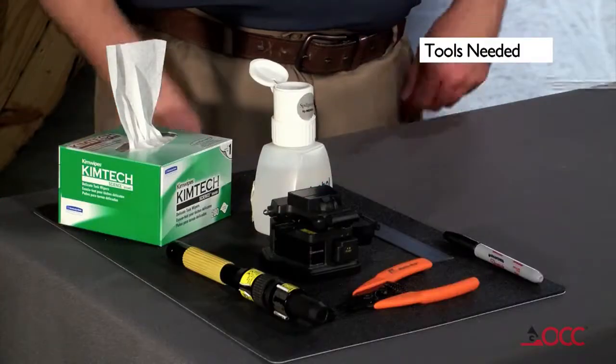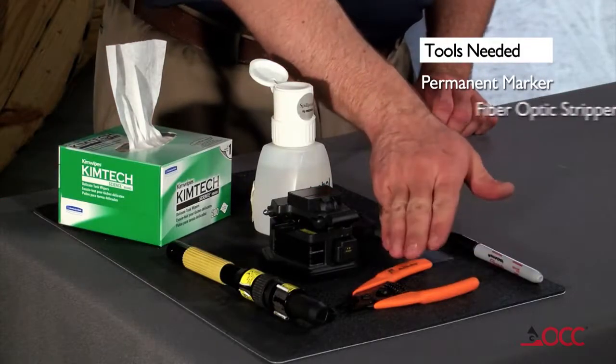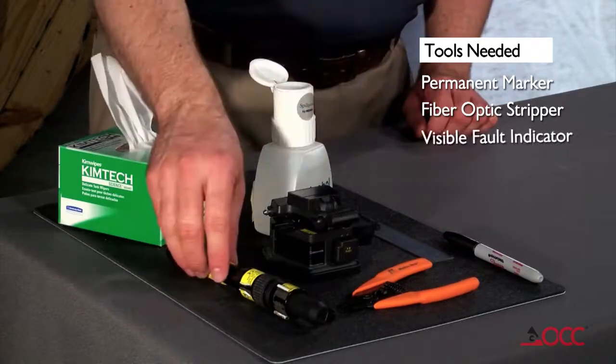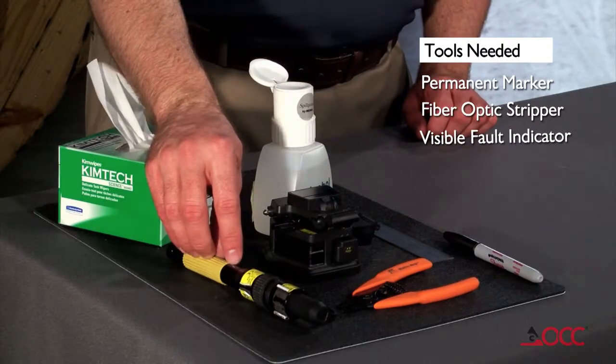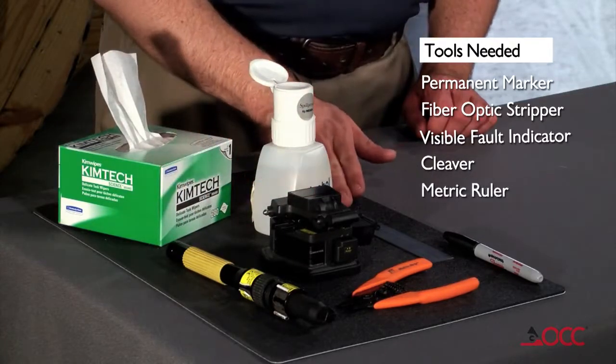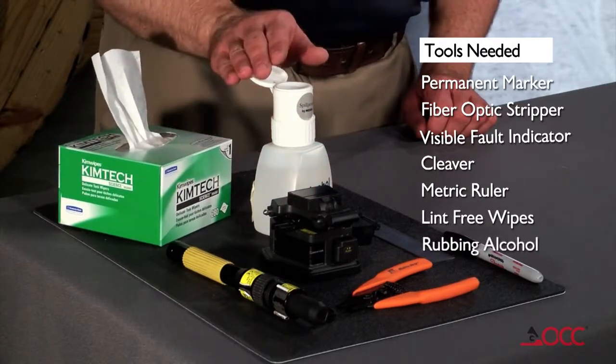The specific tools that you will need are a permanent marker, a fiber optic stripper, a visible fault indicator (the visible fault indicator is optional but highly recommended), a cleaver, a metric ruler, lint-free wipes, and rubbing alcohol.